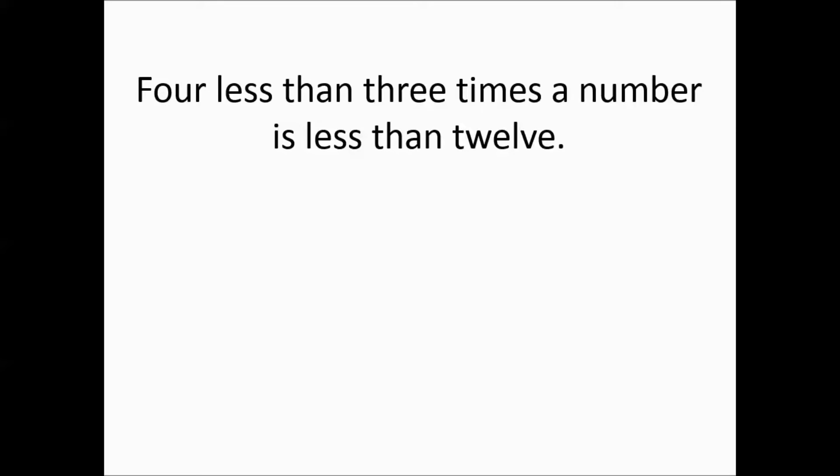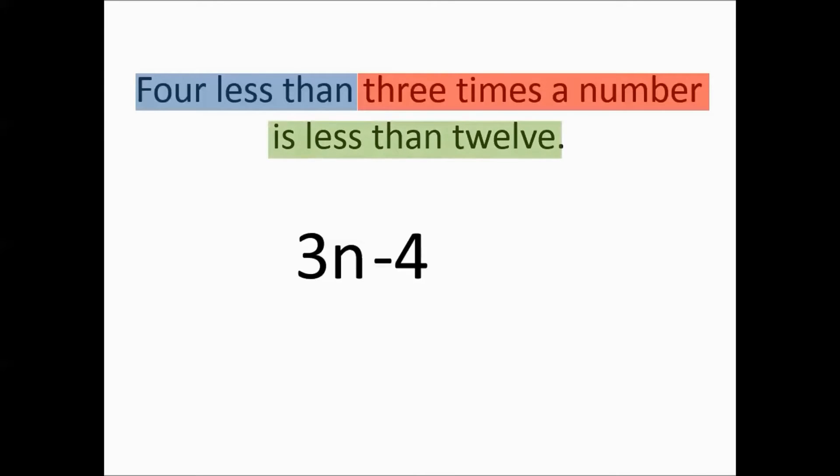Four less than three times a number is less than 12. Now the word less than appears twice here, but they're two entirely different meanings. Four less than means something minus four. And then we have that three times a number that was after. That's going to go in front. And then it says is less than 12. So the is less than means it's an inequality. So that's going to be the is less than 12.